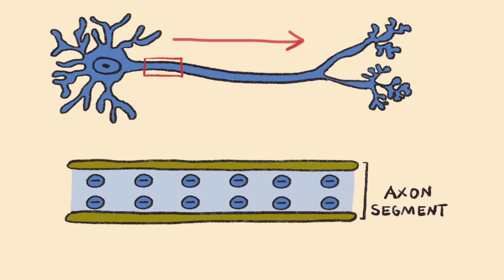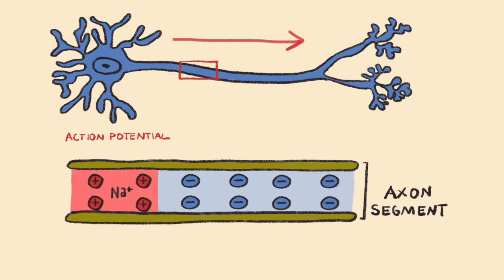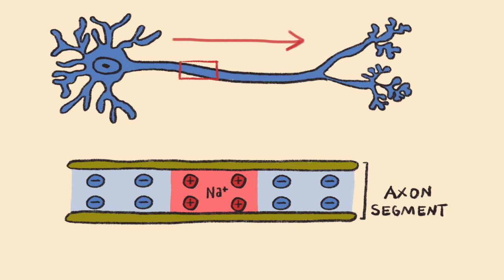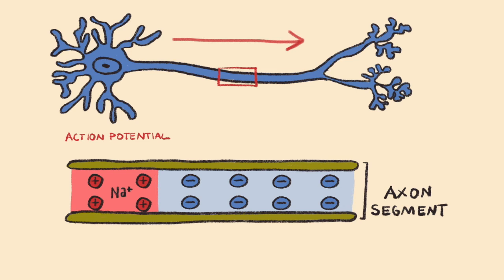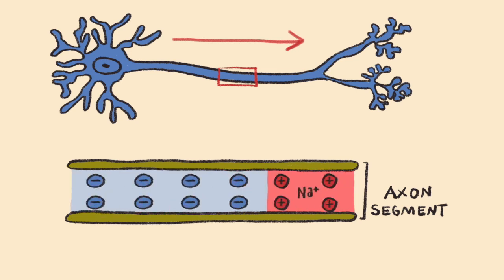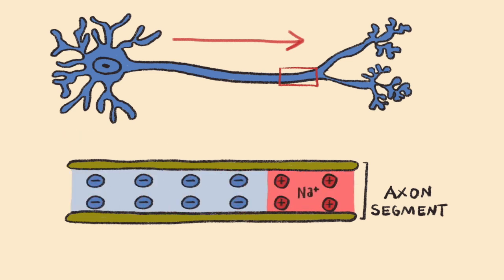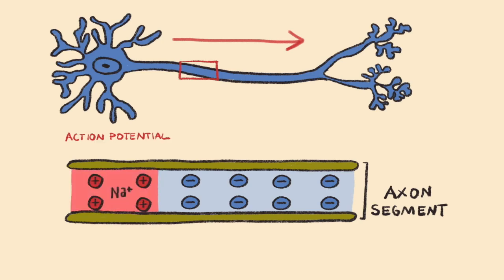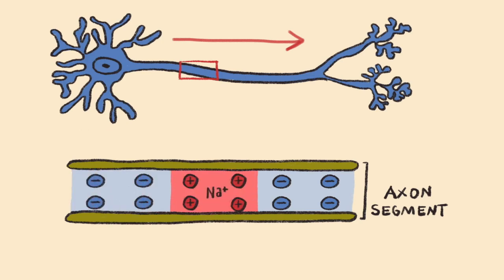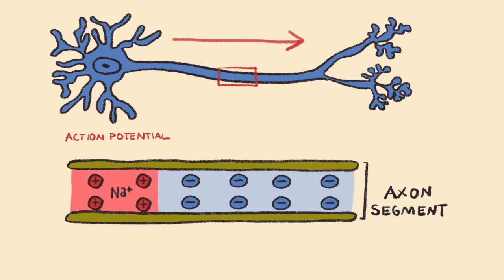This then causes the opening of voltage-gated sodium channels and depolarization of the next region, and so on. Therefore, action potentials are traveling along an axon much like dominoes, acting as a step-by-step depolarization and repolarization down the axon towards the axon terminals. This process is very important because electrical signals decay as they travel, so regenerating the action potential at each region along the axon ensures that the signal does not decay before reaching the end of the neuron.